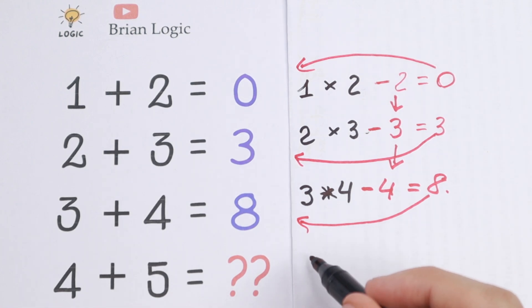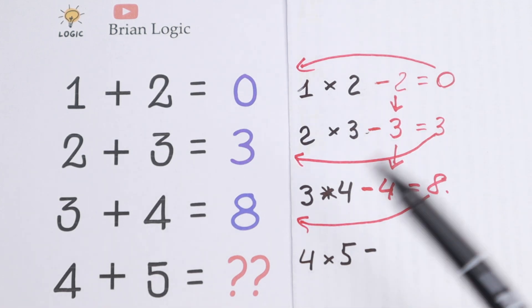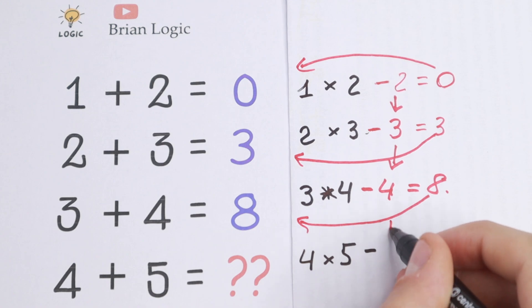So firstly, we will have 4 times 5. This is the pattern from this row, we multiply these two digits, and minus the next natural number. In our case, it will be 5.